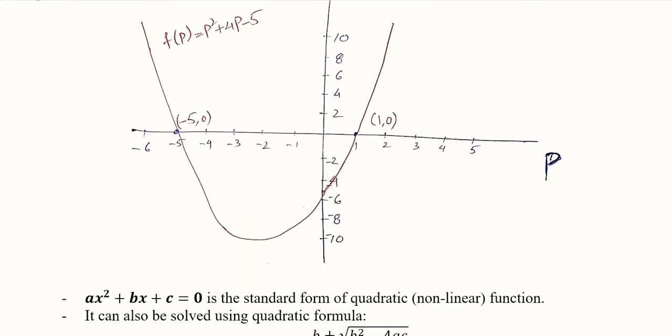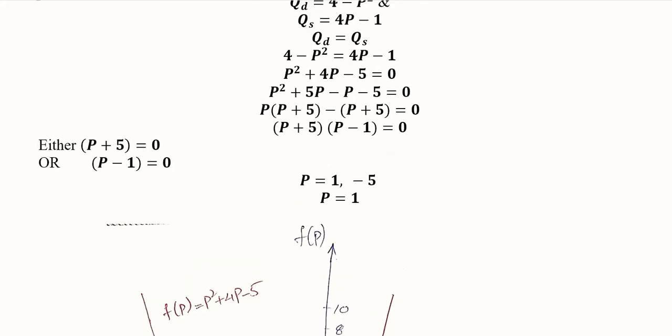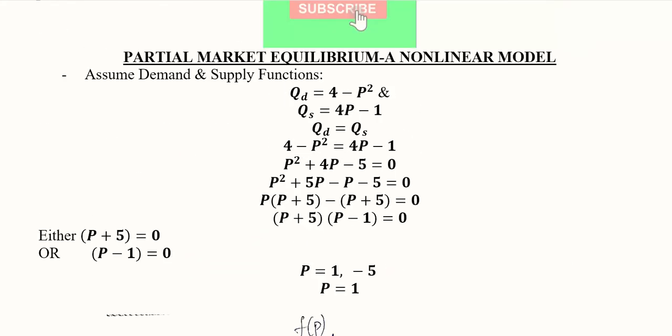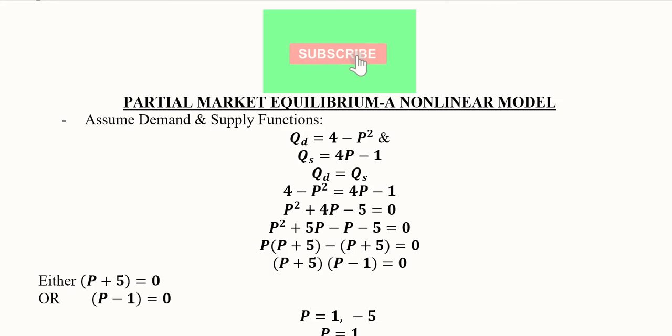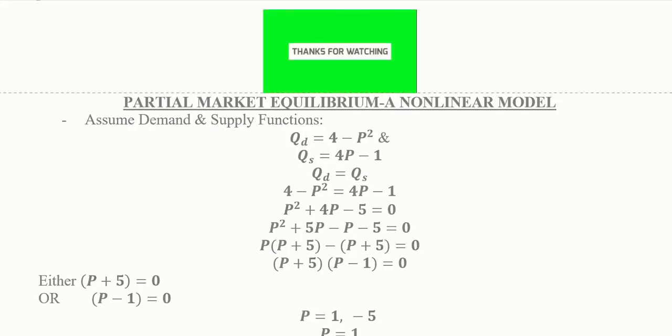This was its diagram, and this was the solution of the partial market equilibrium with a non-linear model where the quantity demanded is represented in a demand function which is non-linear. And this was the equilibrium price. From it we can also find the quantity demanded and the quantity supplied.